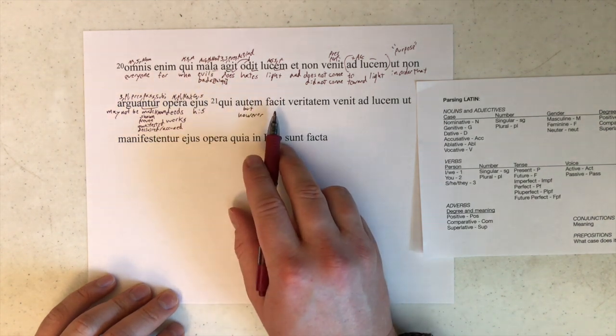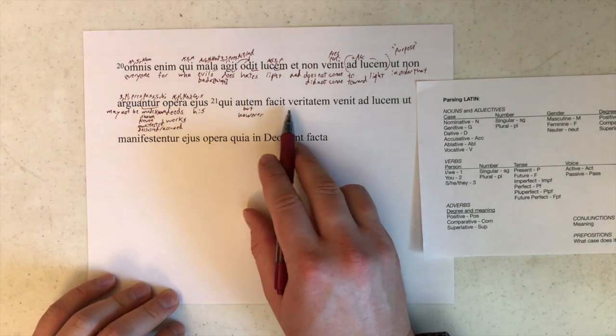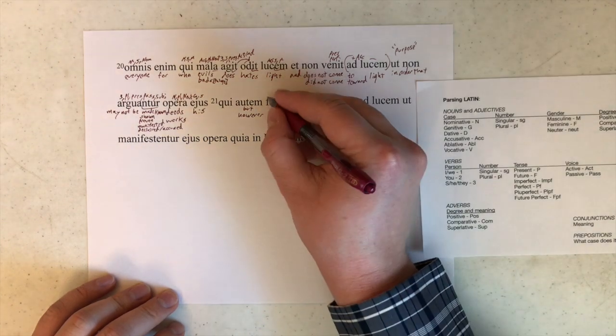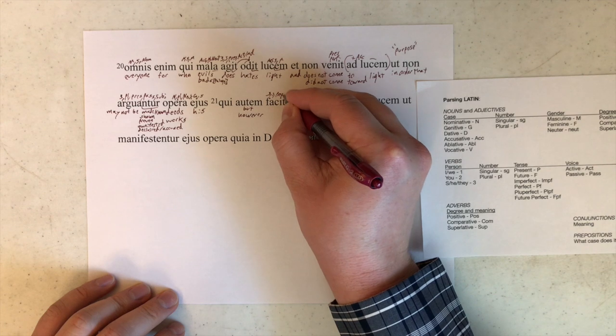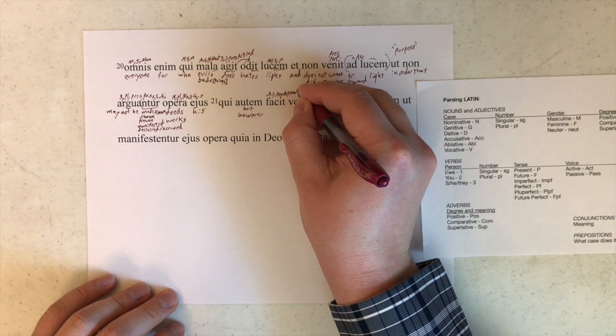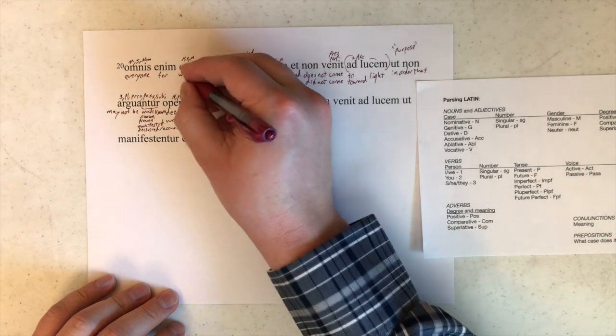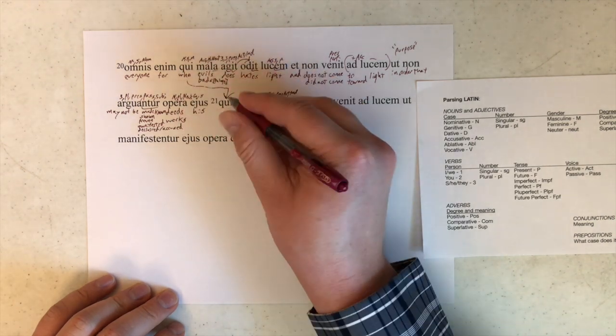Looking at our verb in this relative clause, we see facit there. It tells us third person, singular, present, active, indicative. So qui is confirmed as same as that one. Drawing that down.